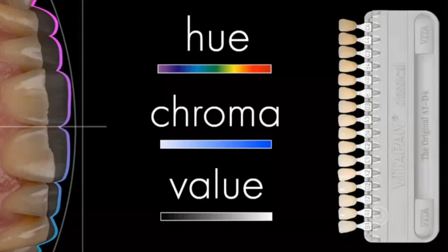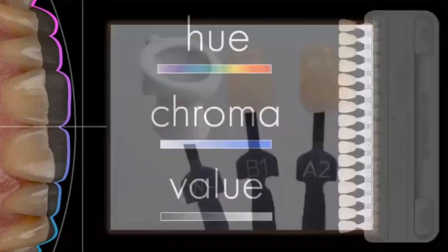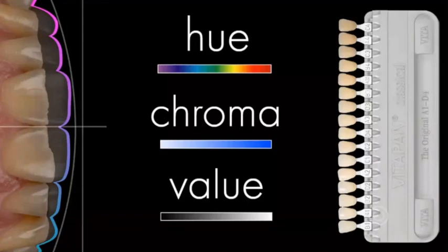When looking at tooth color, you're not just looking at the Vita shade guide — you're breaking the tooth down into three parts: hue, chroma, and value. Hue is what most people would call 'color' — the violets, reds, blues, greens, yellows. On the shade guide you have different hue letters: A, B, D. Chroma is the saturation of the hue — the 1, 2, 3, 4 numbers. An A1 to A2 to A3 to A4 is increasing chroma.